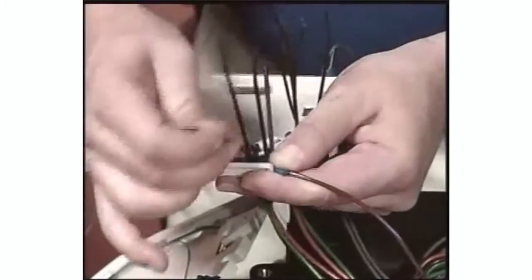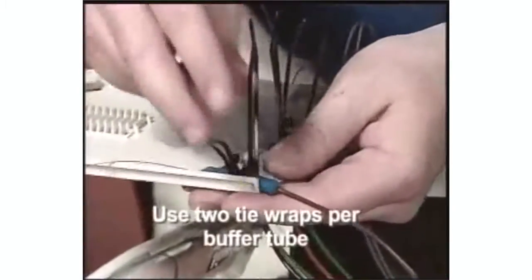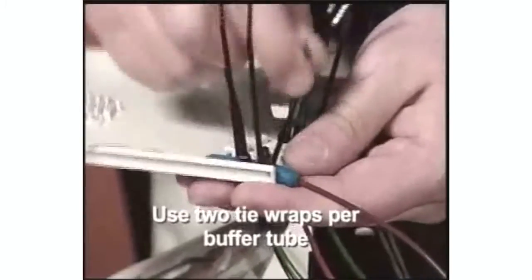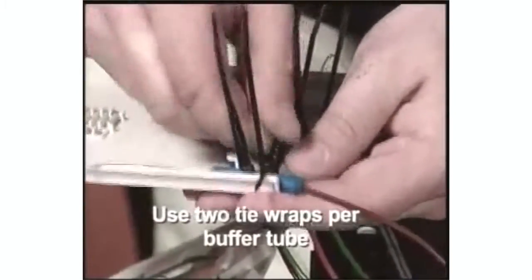Secure the buffer tubes to the trays using the provided tie wraps and secure them around the blue felt.